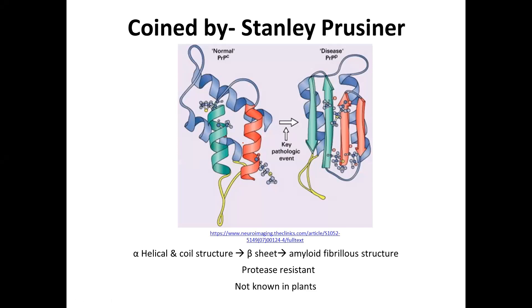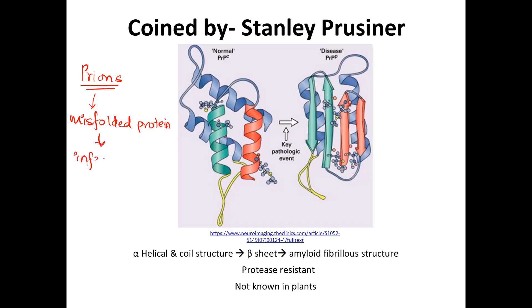So firstly, what are prions? Basically the word prion comes from misfolded proteins. A misfolded protein is called a prion and this protein is basically an infectious agent.